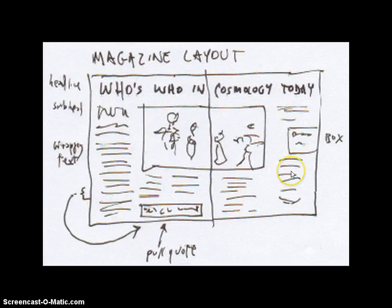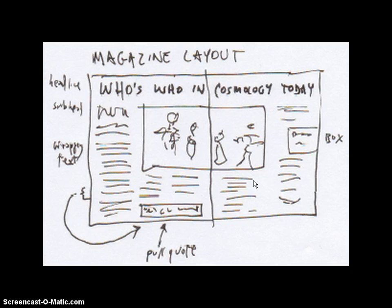So what you want to do is pick what your subject is for your magazine layout, and then start generating some ideas on paper. Figure out what images do you need, where could you put callouts, how many columns do you want — do you want three columns, two columns, or four columns? And once you've generated some ideas, you can get designing.